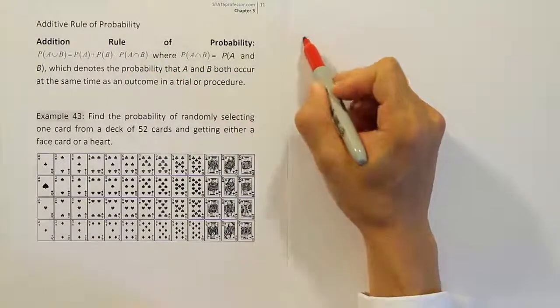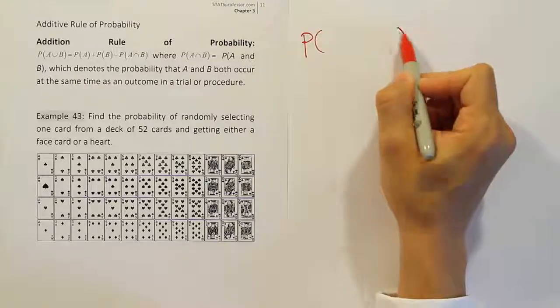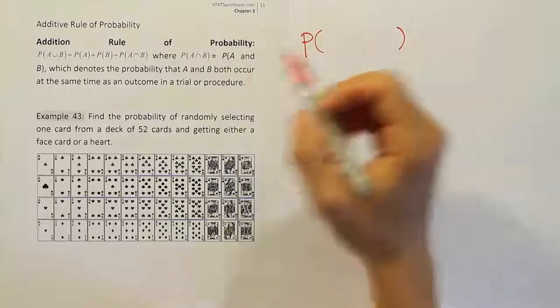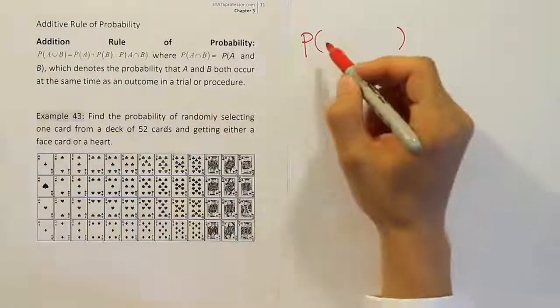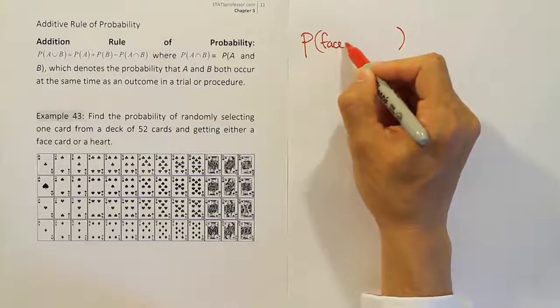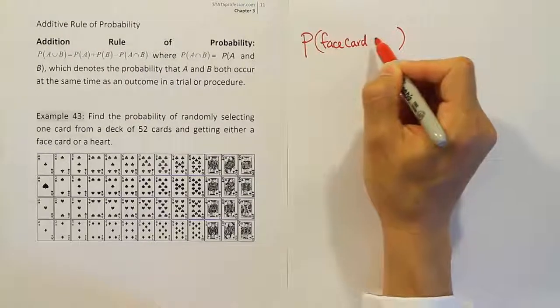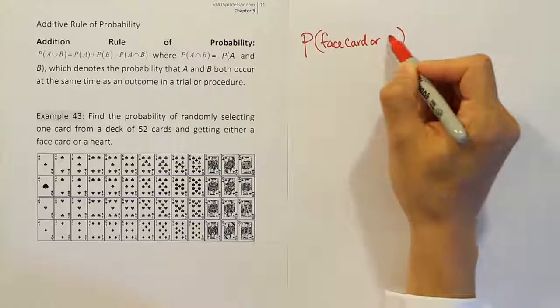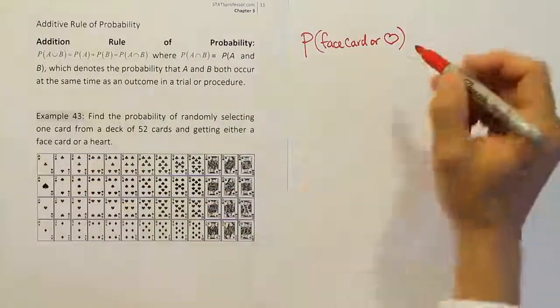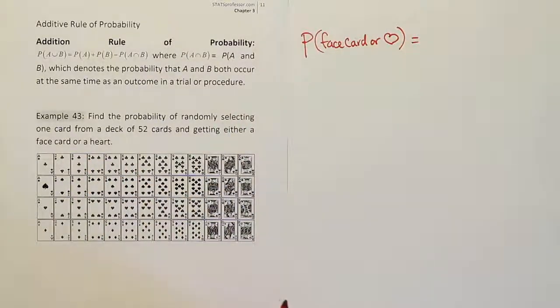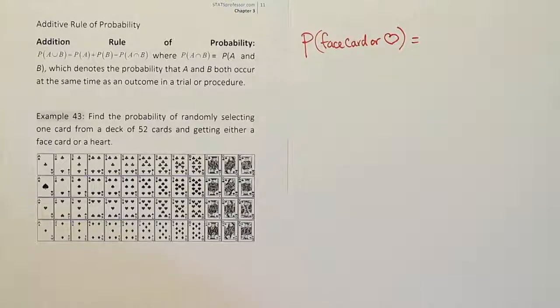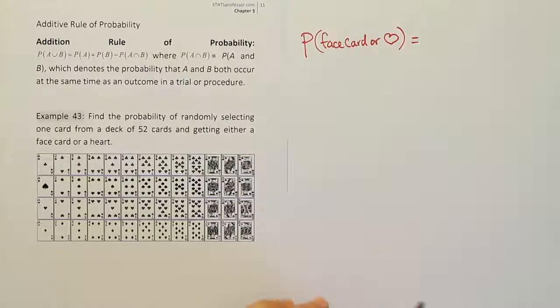The formula is going to work like this. We put the two things that we're looking for in here. So we'll literally say probability of face card, face card, or a heart. So face card or a heart. We fill it in just like that. And then from there, we're going to fill out the rest of the formula by following what it says.